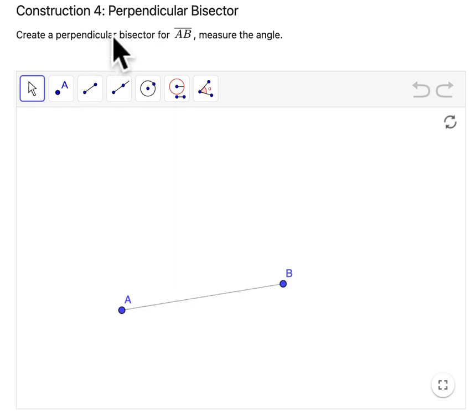In this video, we're going to use GeoGebra to construct a perpendicular bisector. We've got A and B right here.